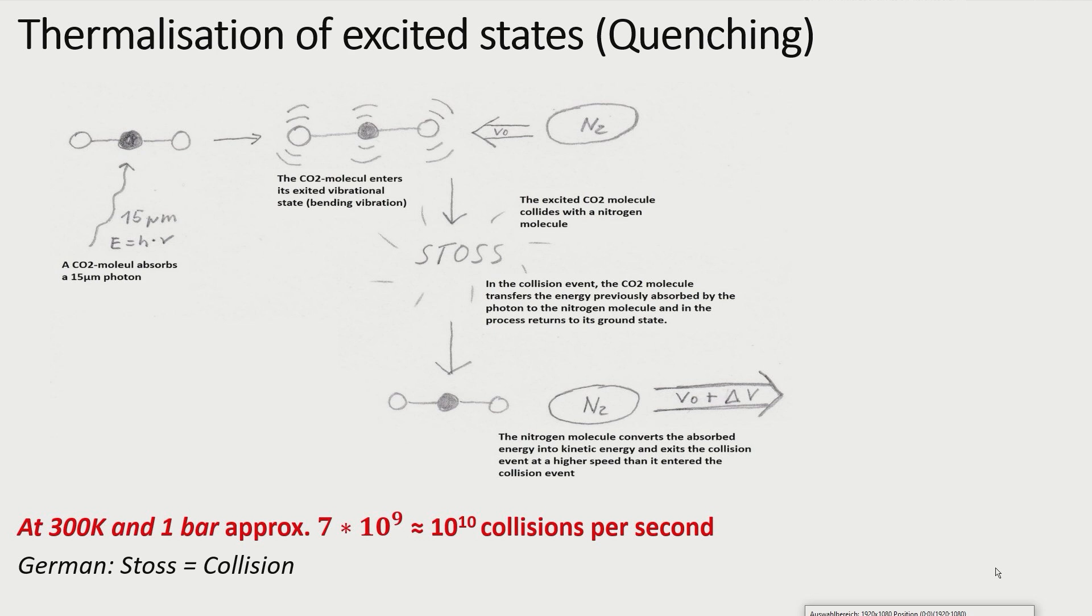At ambient temperature and pressure, air molecules experience about 7 times 10 to the 9th power collisions per second. That means the thermalization is by orders of magnitude faster than the emission from the excited state, which has a half lifetime of about half a second.